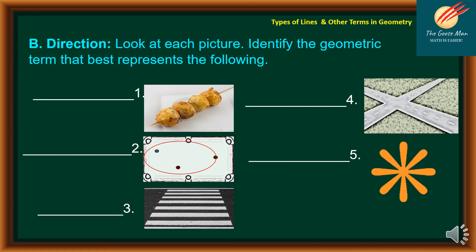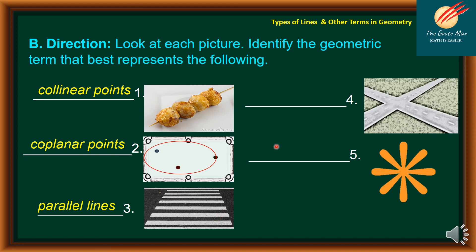Let's move on to the second part of our exercise: look at each picture and identify the geometric term that best represents it. Number one shows points that are aligned, so the answer is collinear points. Number two shows points lying on the same plane, so this is coplanar points. Number three shows lines lying on the same plane, so these are parallel lines. Number four has two possible answers: intersecting lines or concurrent lines. Number five is a representation of concurrent lines because they intersect at one point.